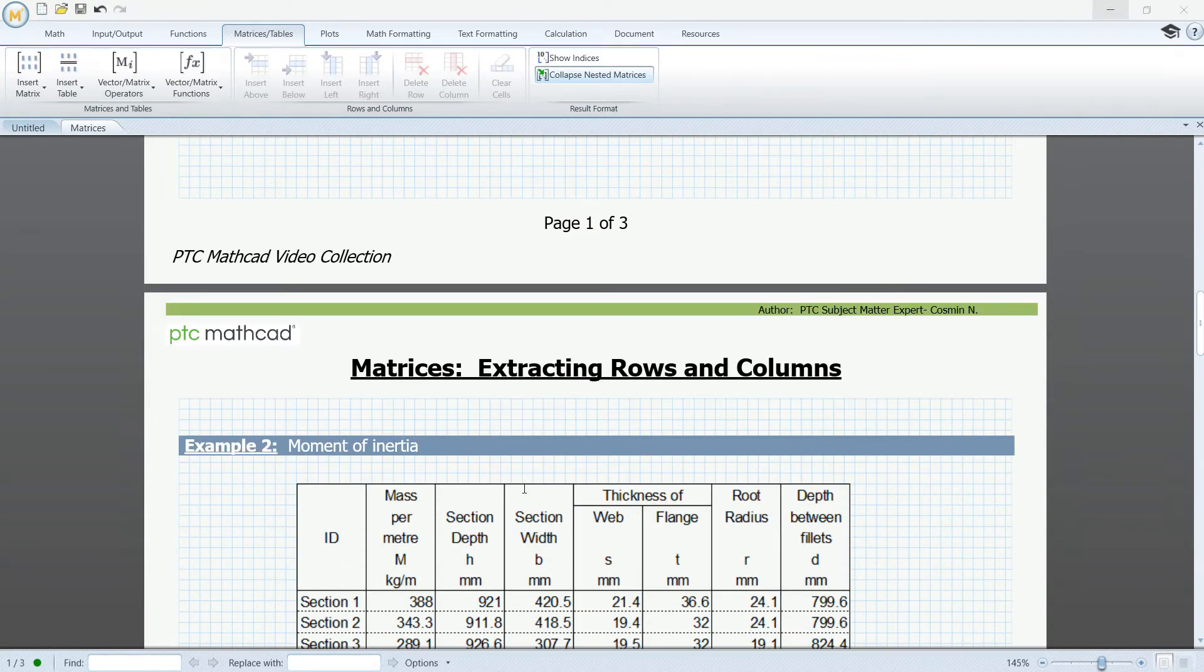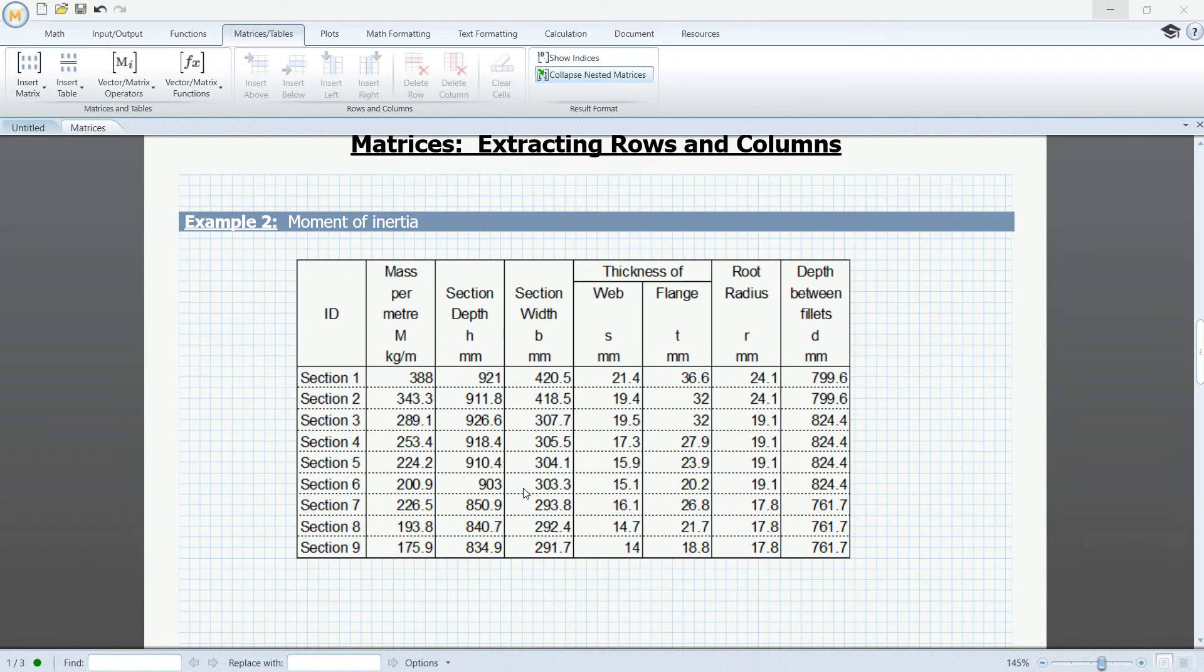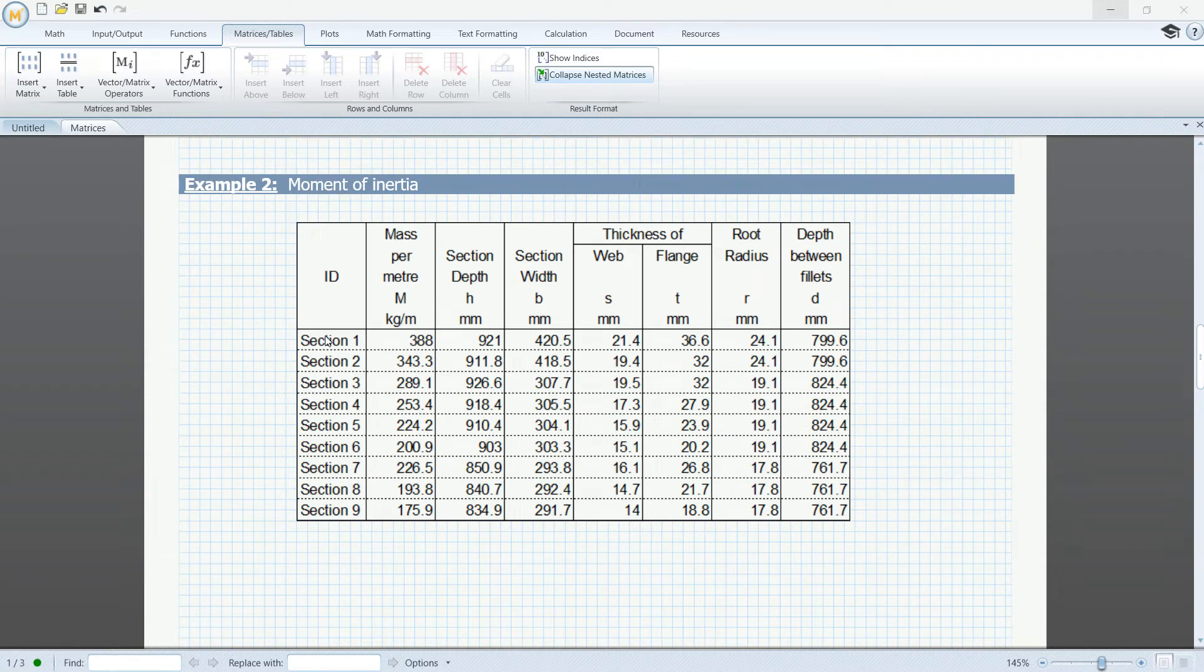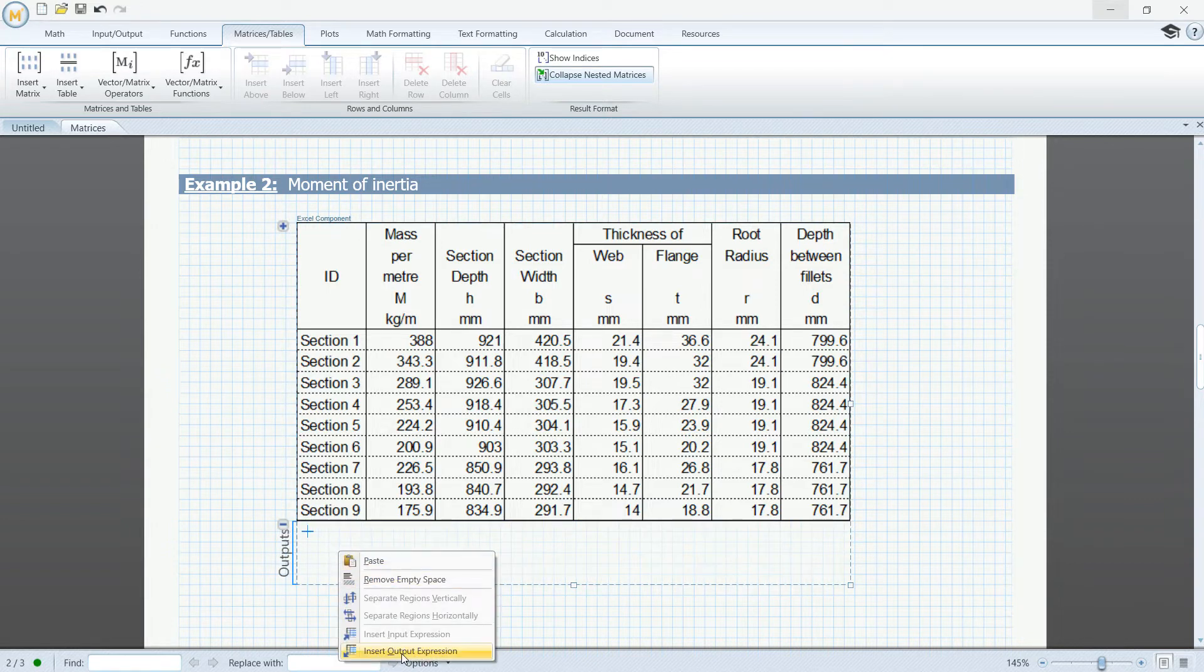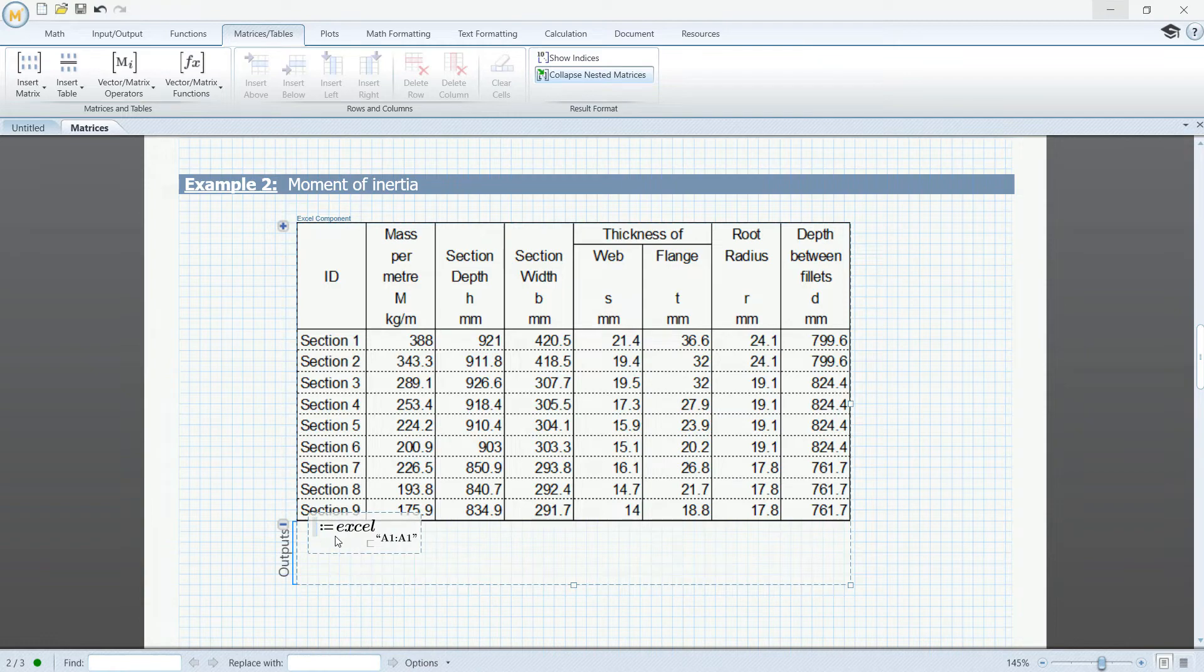For the second example, I have created here an Excel component, and each row of the component represents dimensions that we'll be using to calculate the moment of inertia of an IB. The first thing that I want to do is expand this output section and right-click inside to insert an output expression.